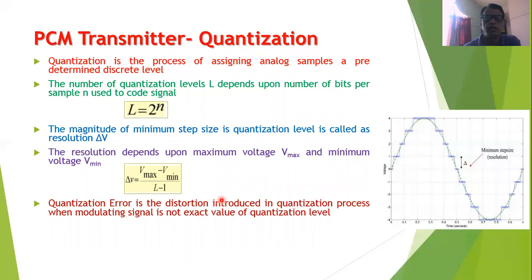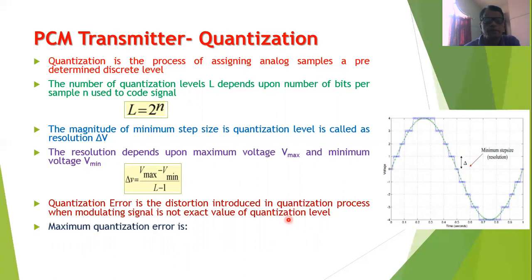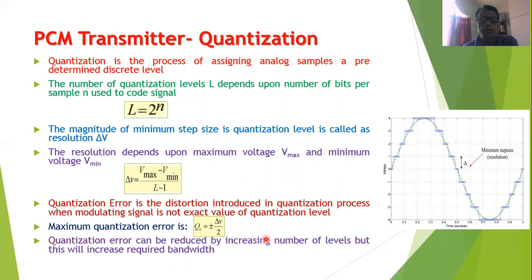Quantization error is the distortion introduced during quantization when the modulating signal is not at an exact quantization level. Certain groups of values are assigned the same discrete level, introducing this error. The maximum quantization error is QE = ±delta V / 2. The quantization error depends on the resolution delta V — if resolution is less, quantization error is also less. Quantization error can be reduced by increasing the number of levels, but this requires larger bandwidth because the number of bits per sample increases.